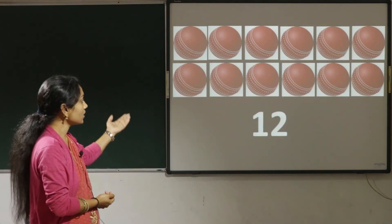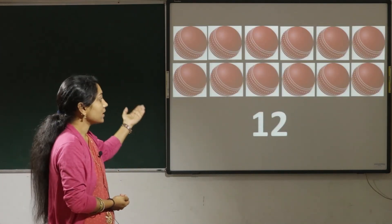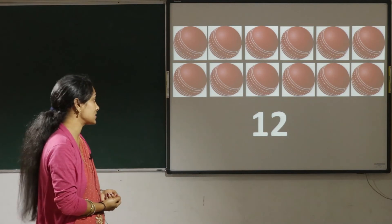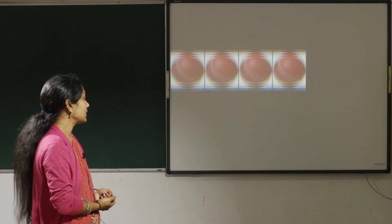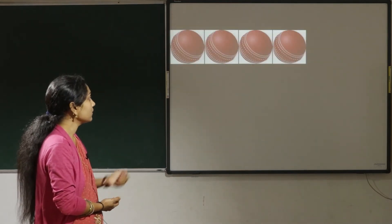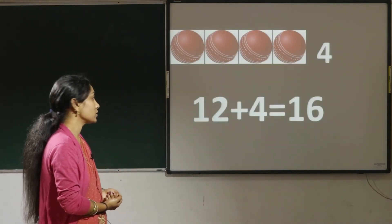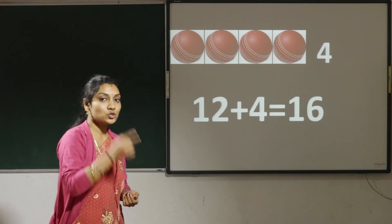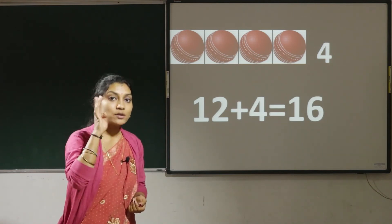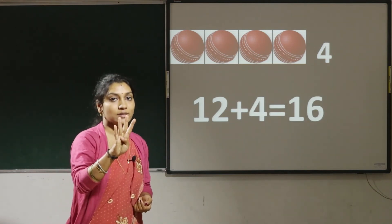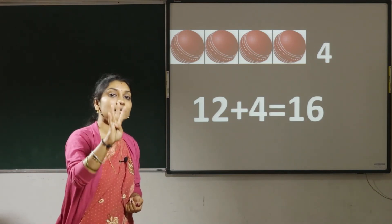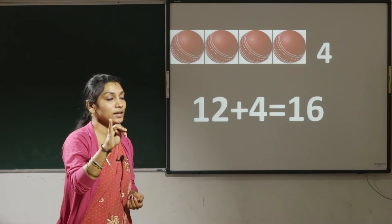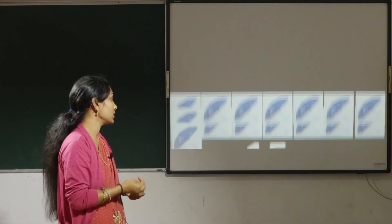Here there are 12 balls. Let us add 4 more balls to that. So 12 plus 4 — 12 in the mind, 4 in the hand. After 12: 13, 14, 15, 16.